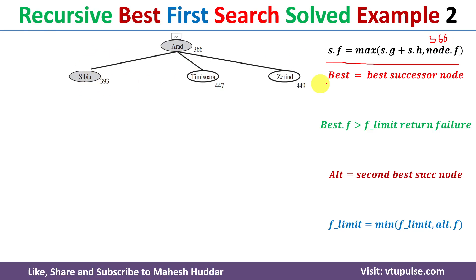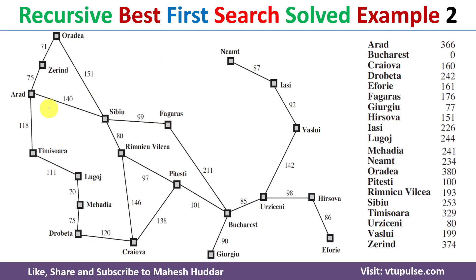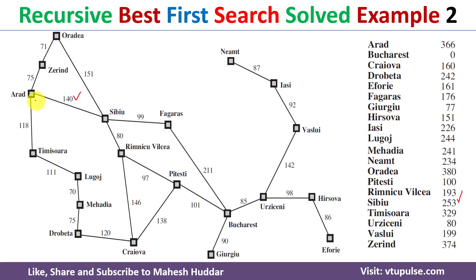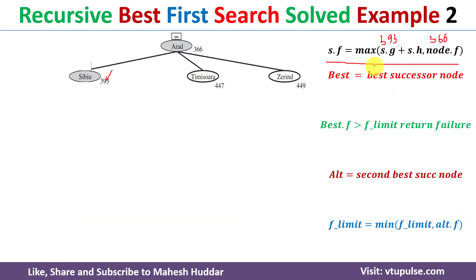For Sibiu: g(Sibiu) = 140, h(Sibiu) = 253, so 140+253 = 393; max(393, 366) = 393. For Timisoara: g = 118, h = 329, so 118+329 = 447; max(447, 366) = 447. Similarly, we calculate the f value for Zerind.